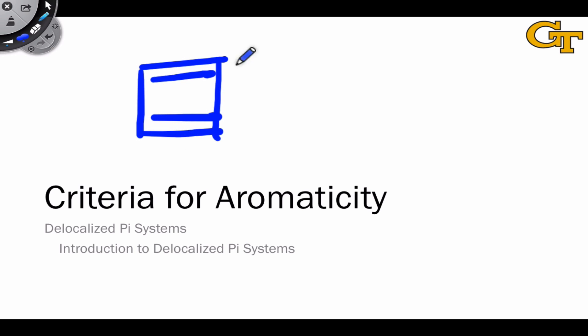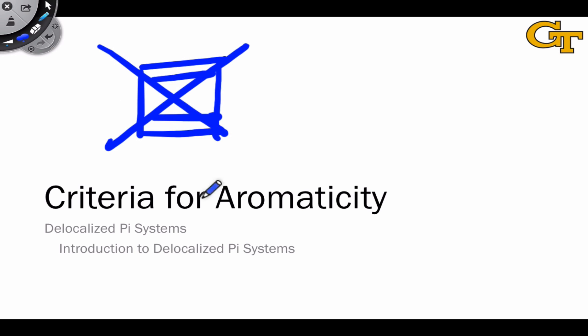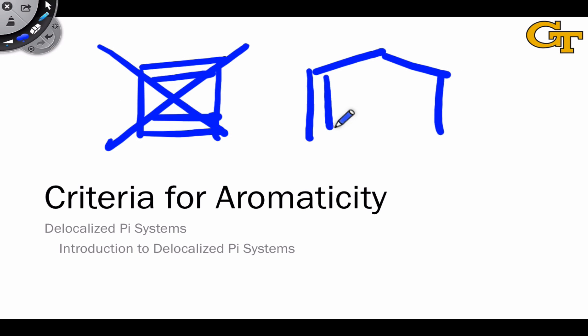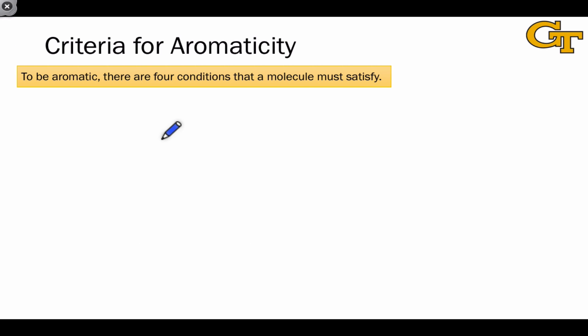In this video, we're going to lay out the criteria for aromaticity, and by the end of this video, it will be very clear why cyclobutadiene is not an aromatic compound, while benzene, which has six carbons and six pi electrons, is. To decide whether a molecule or a substructure within a molecule is aromatic, we need to look at four conditions or criteria, and it's important that the molecule satisfies all four in order for it to be aromatic.